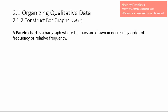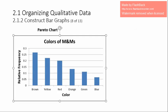This leads us to the next definition, which is a Pareto chart. A Pareto chart is a bar graph where the bars are drawn in decreasing order of frequency or relative frequency. Here is a Pareto chart representing the categories in decreasing order. After organizing the data in decreasing manner, you can create this using Excel, and I will show you how in a separate video.